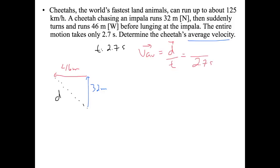Displacement is the straight-line vector from start to end. This forms a right triangle because the cheetah went north then west. The simplest approach is to use the Pythagorean theorem: displacement equals the square root of 32 squared plus 46 squared.